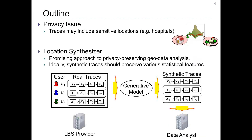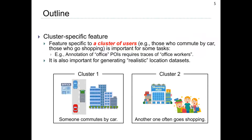To address the privacy issue, the location synthesizer has been widely studied. In this approach, we train a generative model from real traces, then generate synthetic traces from the generative model. Ideally, synthetic traces should preserve various statistical features while protecting user privacy. In particular, users form some clusters, such as those who commute by car and those who often go shopping, and features specific to such clusters are important for some geodata analysis tasks. For example, annotation of office POIs requires traces of office workers, so location synthesizers should have this cluster-specific feature.